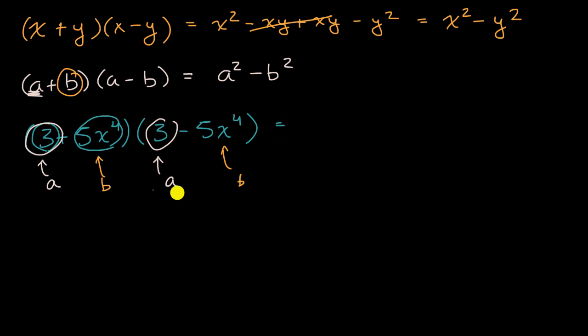So this is going to be equal to a squared minus b squared. Our a is three, so it's three squared minus our b, which is five x to the fourth, so minus five x to the fourth squared. This simplifies to three squared is nine, and then minus five x to the fourth squared. Five squared is 25, and x to the fourth squared is just x to the fourth times x to the fourth, which is x to the eighth. Another way to think about it using exponent properties: if I raise them to an exponent and then raise that to another exponent, I multiply the exponents.